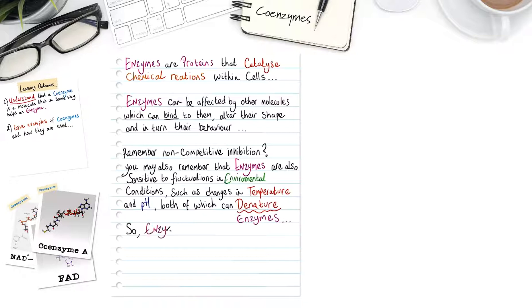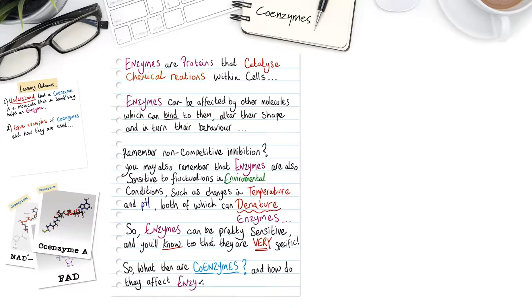So, enzymes can be pretty sensitive and you'll know too that they are very, very specific. So, what then are coenzymes and how do they affect enzyme activity?